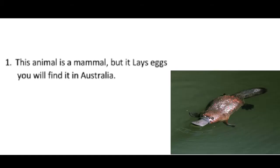Our question number 1: this animal is a mammal but it lays eggs. You will find it in Australia. It is platypus. The platypus is a duck-billed, beaver-tailed, otter-footed, egg-laying aquatic creature native to Australia. It is one of the five mammal species that lay eggs instead of giving birth to young ones.